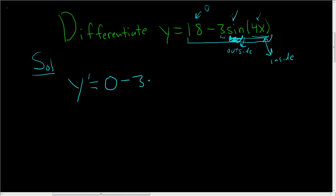So it's the derivative of the outside - the derivative of sine is cosine - and you don't touch the inside, times the derivative of the inside, which is 4.